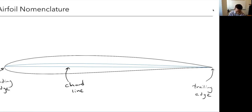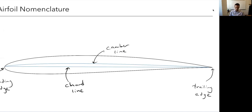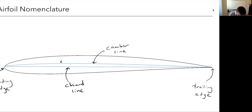This other blue line is called the camber line. Whereas the chord line was a straight line from leading edge to trailing edge, a camber line is halfway between the upper and lower surface. Halfway between them is called the camber line, and the maximum distance between the camber line and the chord line is called the maximum camber, or sometimes just camber for short.